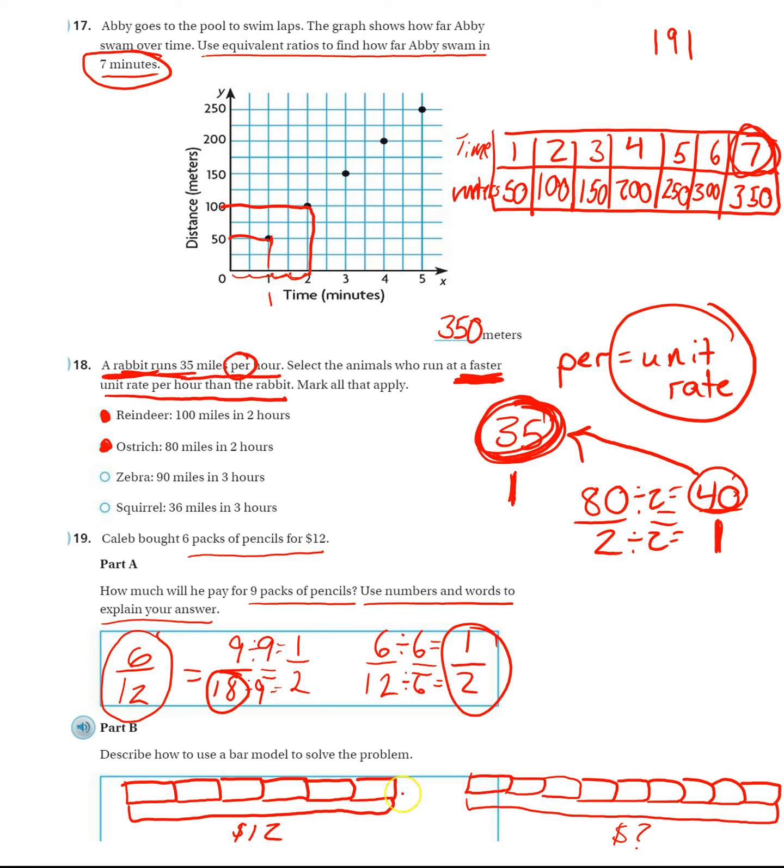And so it would be nice and easy if we could figure out how much one of these costs. So you can see we have six, and if I divide that into 12, that gives me two. Let's see, two, four, six, eight, ten, twelve. Yep, that's 12 bucks. So I know these all need to be two. And so I have two, four, six, eight, ten, twelve, fourteen, sixteen, eighteen bucks.